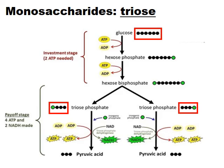Looking at a respiration diagram, the six-carbon glucose at the top is broken down into three-carbon triose sugars called triose phosphate. These are the intermediates in the breakdown of glucose that release some of the energy originally wrapped up in that glucose molecule.